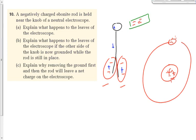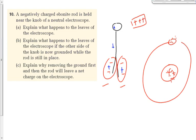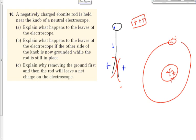What would happen if you put a positive bar near the electroscope instead? The positives stay where they are, but the negatives all get pulled up toward the knob. That still leaves like charges on the leaves of the electroscope, so they still spread apart — just with positive charges on the leaves this time instead of negative.